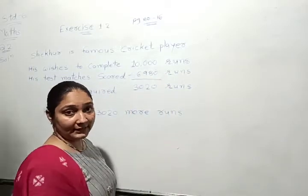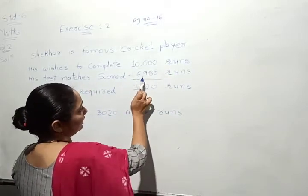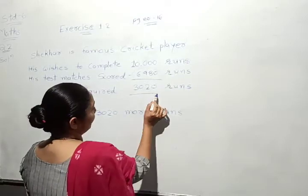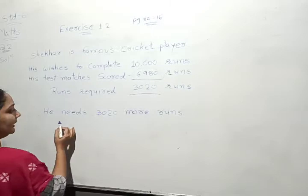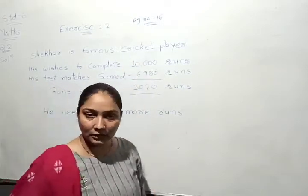Shekhar has 6906 runs. If we have to find how many more runs needed, we use subtraction. 10,000 minus 6,906. Our answer is 3,094 runs. He needs 3,094 more runs to complete 10,000 runs.